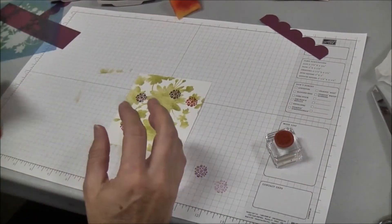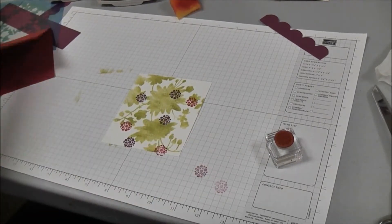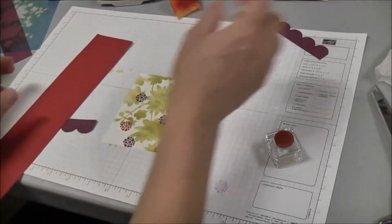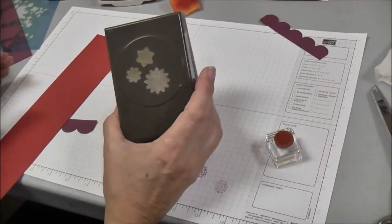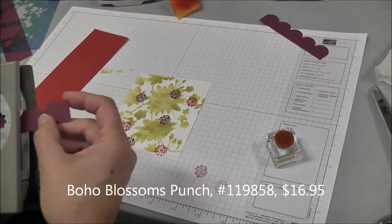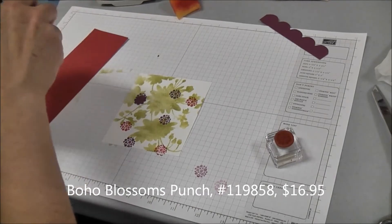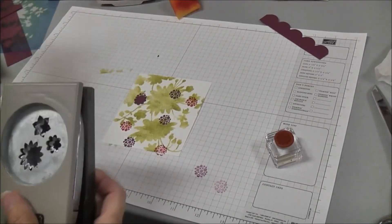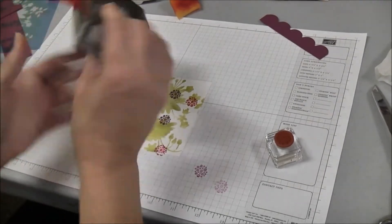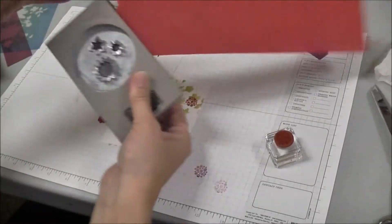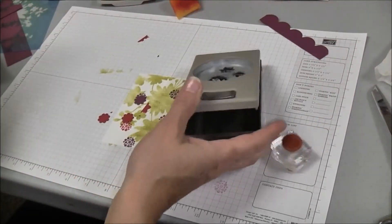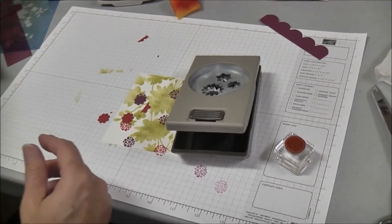Next we're going to take some scrap pieces of rich razzleberry and real red and take our boho blossoms punch and just punch out a couple of different flowers to add as embellishments. I think I'm going to do two red ones and then one rich razzleberry. When you're using these three flower punches you can just stick it in and only get one flower at a time if that's what you need.